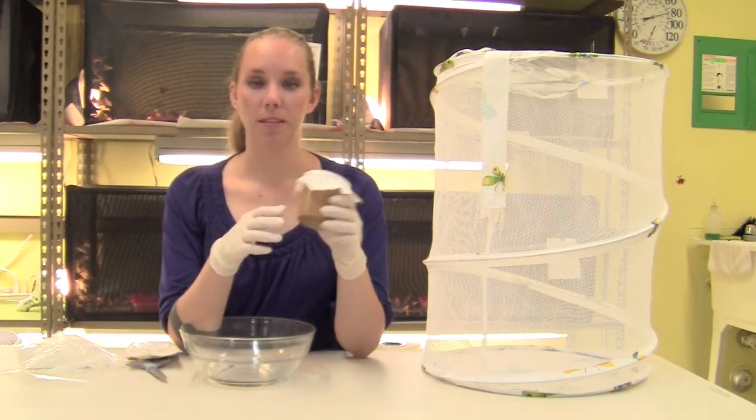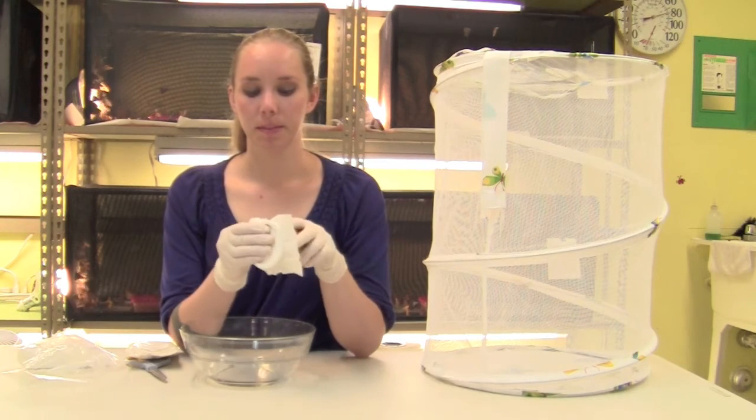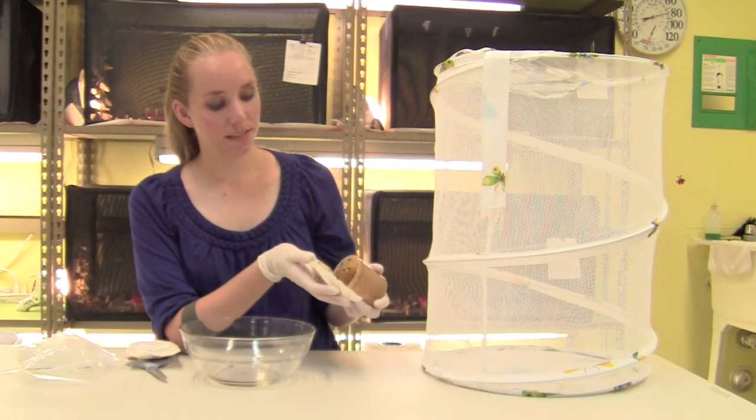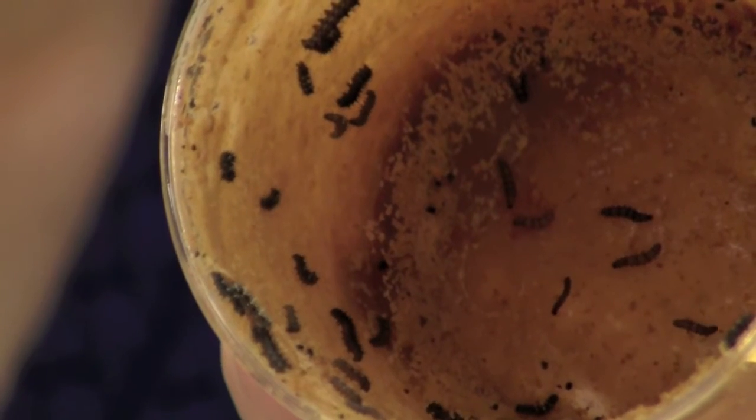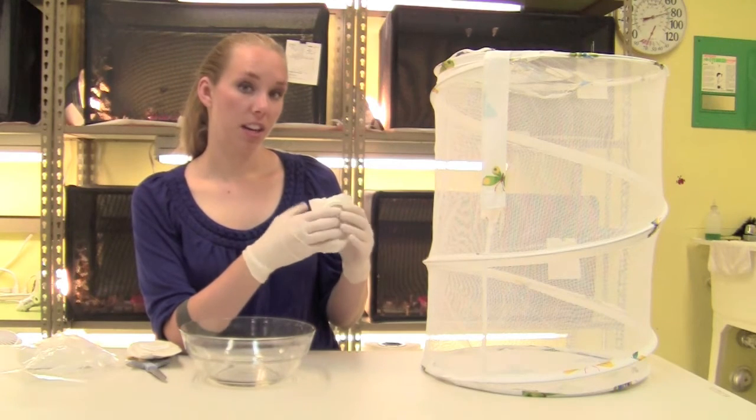When you receive your butterfly larvae, they'll arrive in a cup like this with food on all the inside. We overpack each order of 30 larvae to ensure that you receive at least 30, but you can receive between 30 and 80 larvae.